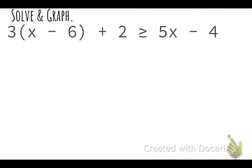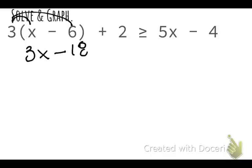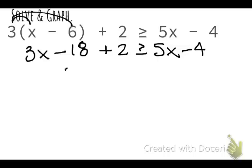Jot down this last example: 3 times the quantity (x minus 6) plus 2 is greater than or equal to 5x minus 4. Solving this inequality is very similar to solving an equation. I'll start by using the distributive property to get 3x minus 18 plus 2 is greater than or equal to 5x minus 4. Combining like terms gives 3x minus 16 is greater than or equal to 5x minus 4.